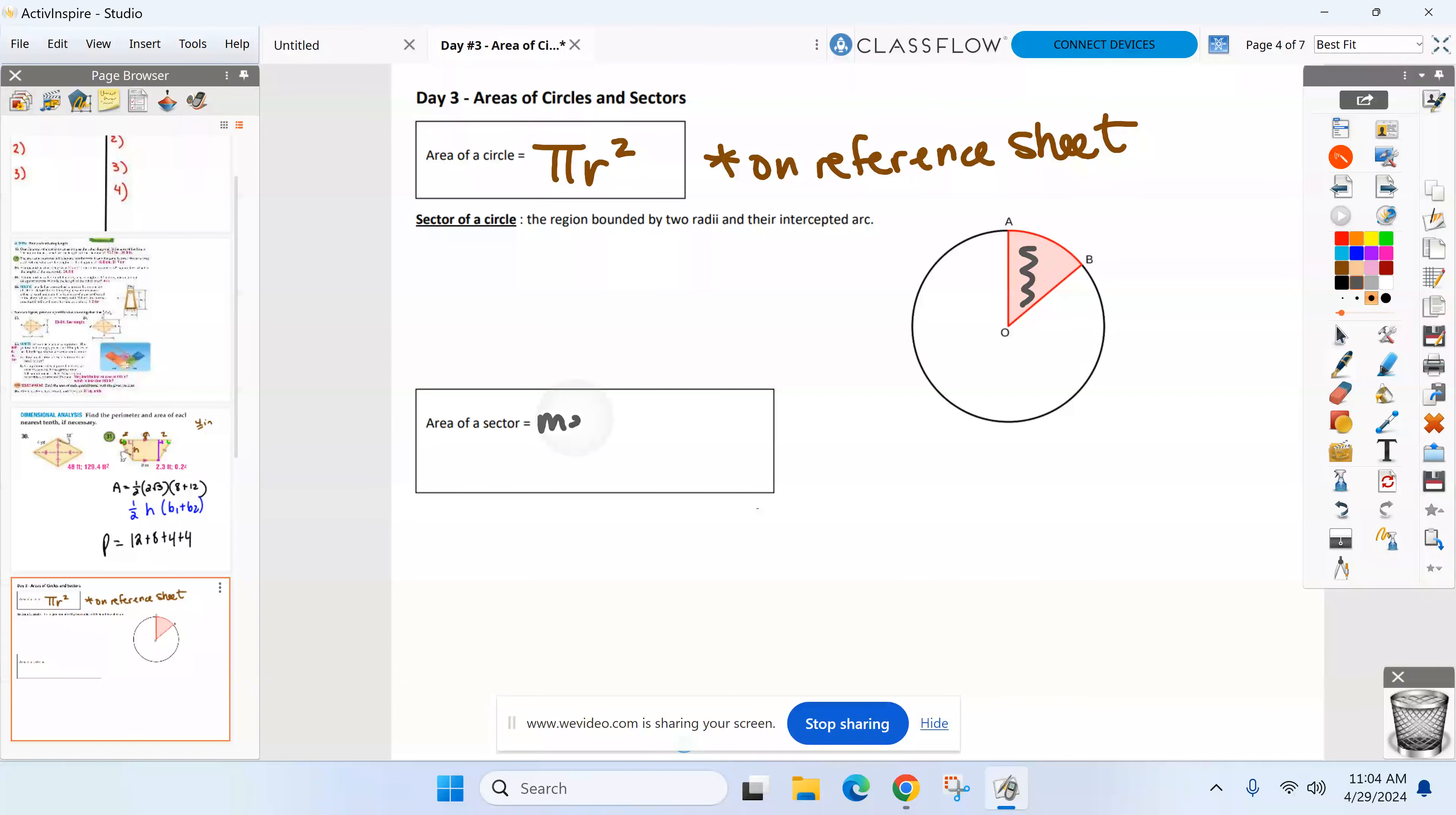Formula for it. First part of the formula is going to sound familiar, I hope. Area of a sector: measure of the arc over 360. Last unit, anybody remember we started a formula off the same way, but it was to find the length of an arc. We finished it with circumference pi d, but I'm not on the outside of the circle, I'm on the inside. So now we're not going to multiply it by the circumference, we're going to multiply it by the area pi r squared.